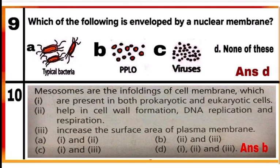Question 10: Mesosomes are infoldings of the cell membrane. Point 1 — they are present in both prokaryotic and eukaryotic cells — is wrong; mesosomes are only present in prokaryotes. Point 2 — they help in cell wall formation, DNA replication, and respiration — and point 3 — they increase the surface area of the plasma membrane — are both correct. Mark B (points 2 and 3) as the correct answer.